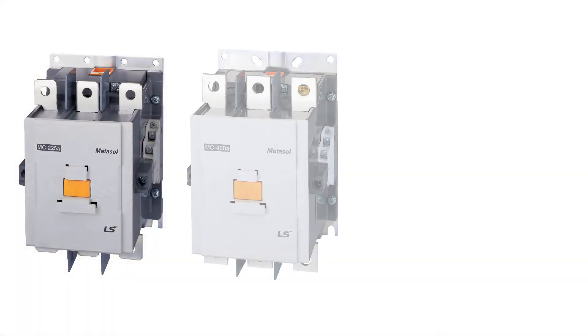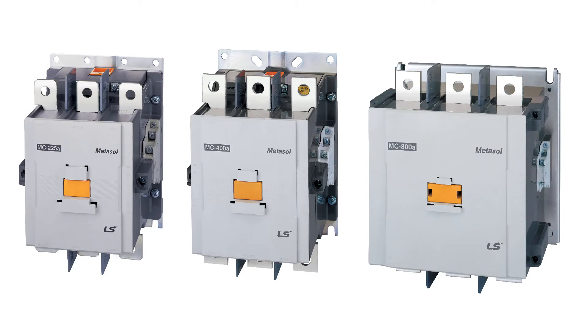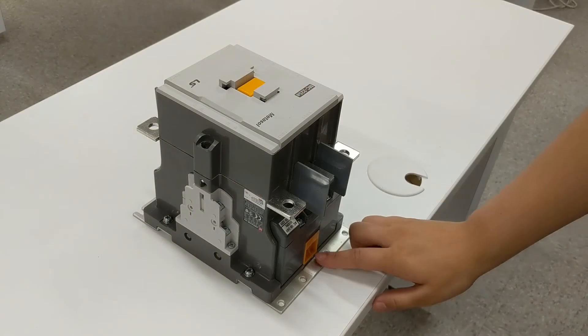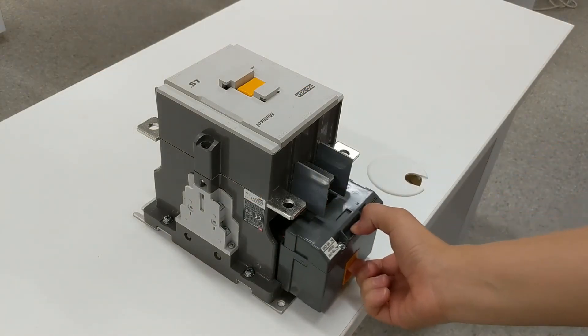For the MC 225M frame to 800M frame contactors, remove the contactor from the box and lay on a flat surface. Locate the orange coil locking mechanism, push it up and pull out the coil.